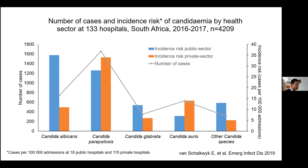We calculated the incidence risk of candidemia for hospitals for which we were able to find admission denominators. In the public sector, the most common pathogen causing candidemia is Candida albicans, followed by parapsilosis and glabrata, and then Candida auris — which at the time, almost four or five years ago, was emerging as a major pathogen. In contrast, in the private sector the epidemiology is different: parapsilosis dominates, followed by Candida auris and albicans — a very different picture.